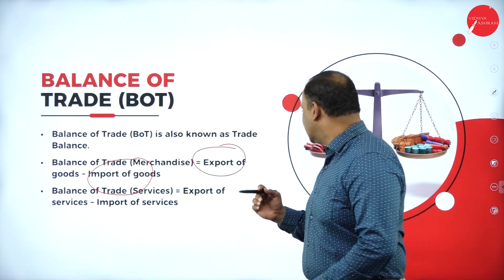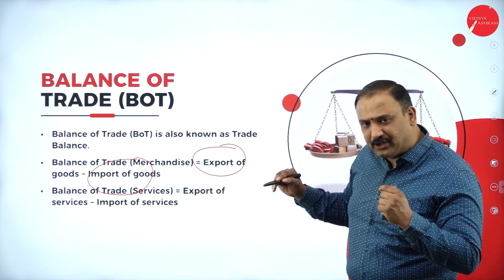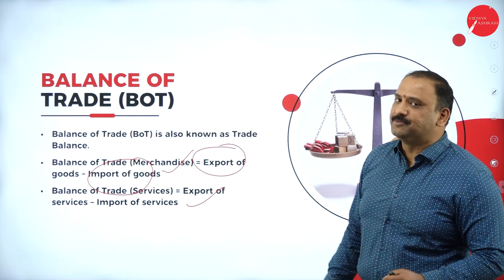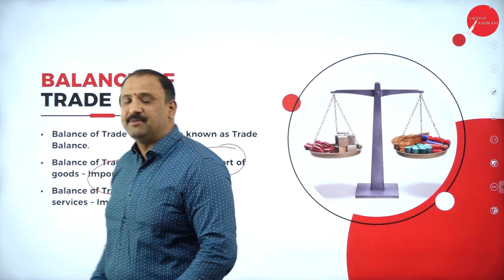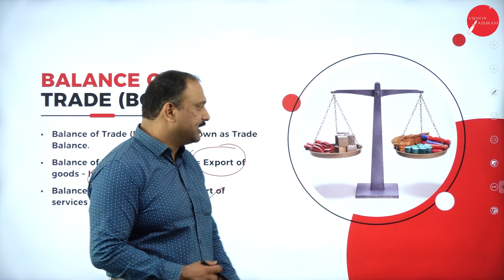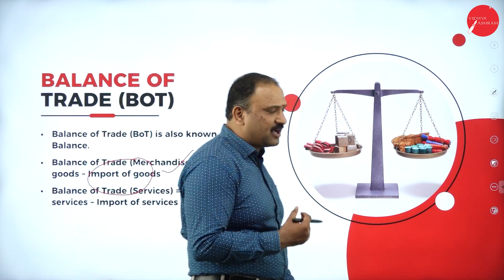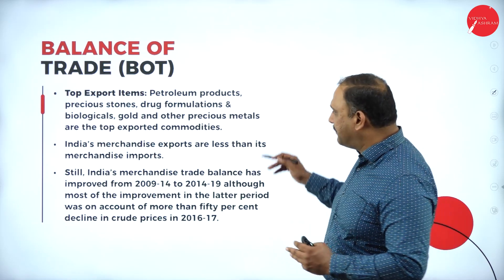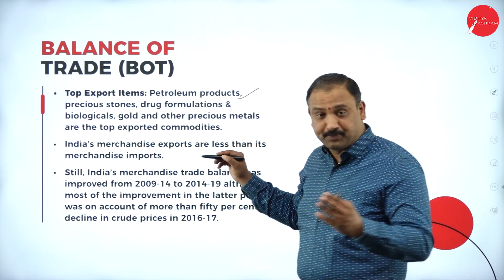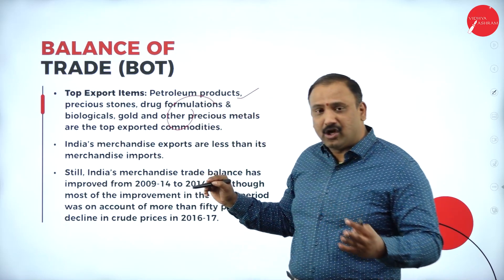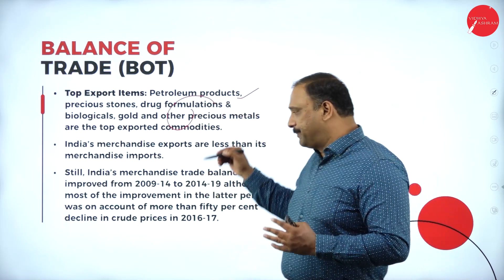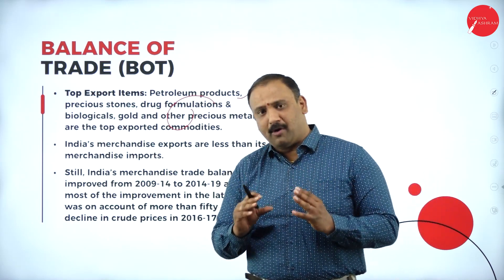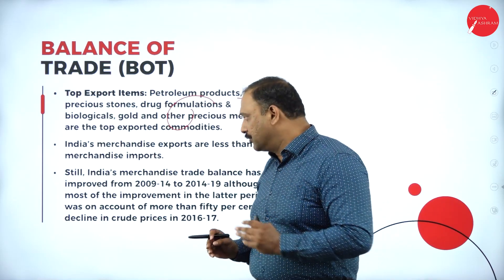What we have been trying to do is increase exports in terms of both goods and services to make this even stronger — that is the aim of our country in the long run. The top export items we have been talking about include petroleum products, precious stones, drug formulations, biologicals, and gold and other precious metals — these are our top exported items from India, making us a major revenue earner.